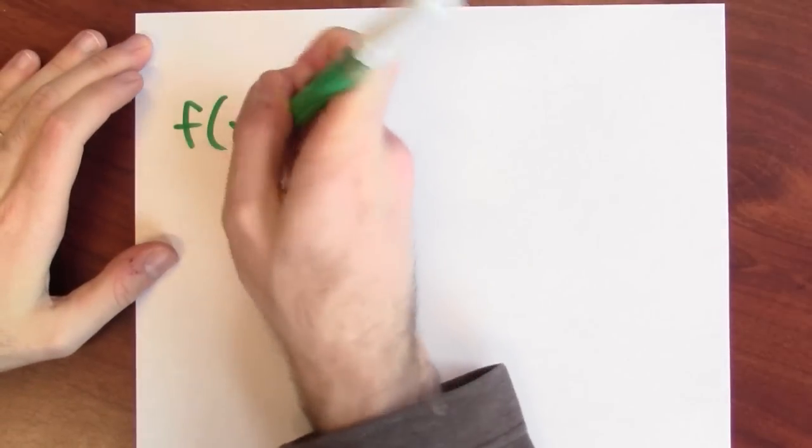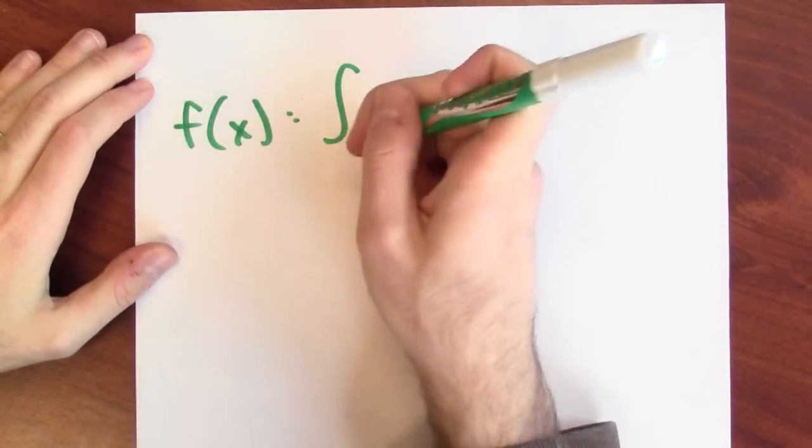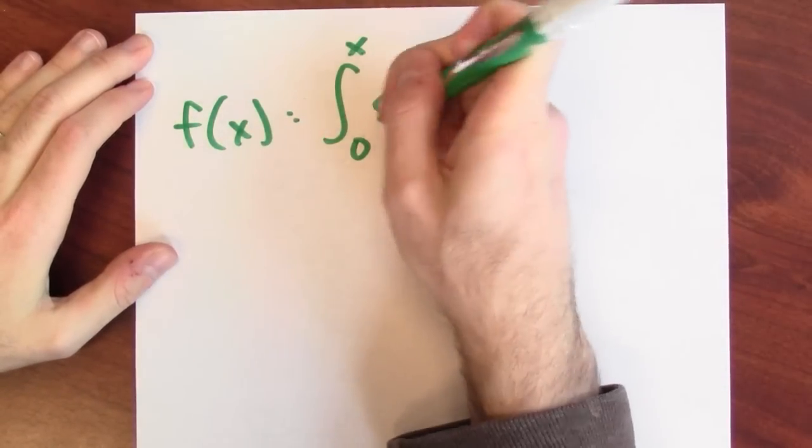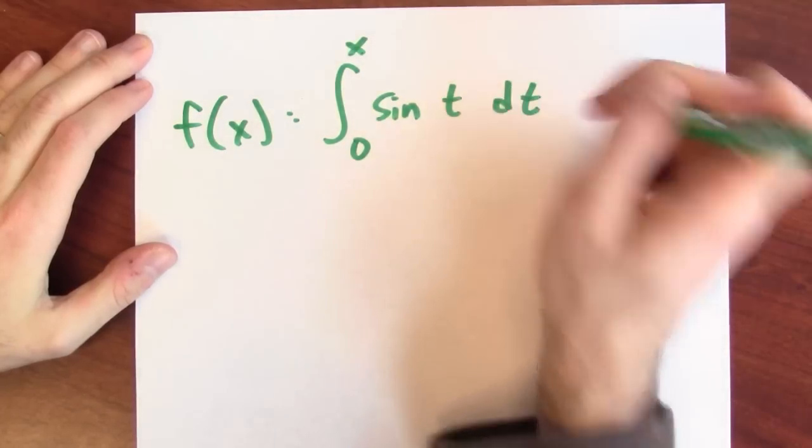So to analyze this, let's define a function f. That function will be given by this rule: f of x is the integral from 0 to x of sine t dt.